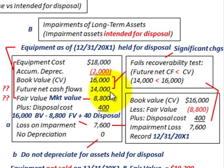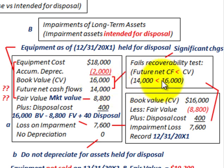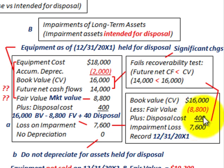Because of these values, we can see significant changes and must apply the recoverability test again. Future net cash flows of $14,000 are less than the carrying value of $16,000, so we fail. We then calculate our impairment loss: book value of $16,000 less fair value of $8,800, plus disposal costs of $400, giving us an impairment loss of $7,600.